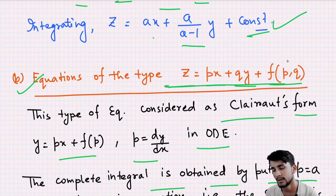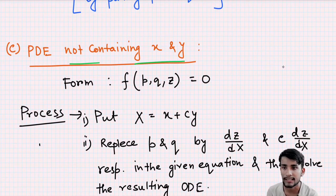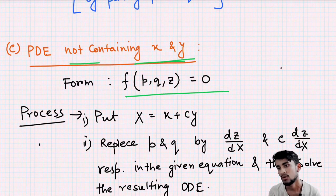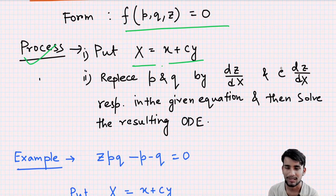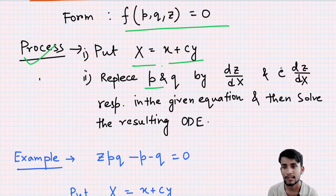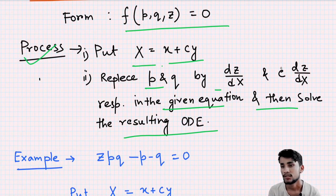Type C is a PDE not containing x and y explicitly, meaning it is of the form f(p,q,z) = 0. The solution process is to substitute x = X + cy, where c is an arbitrary constant, then replace p by dz/dX and q by c·dz/dX in the given equation, and then solve the resulting ODE.